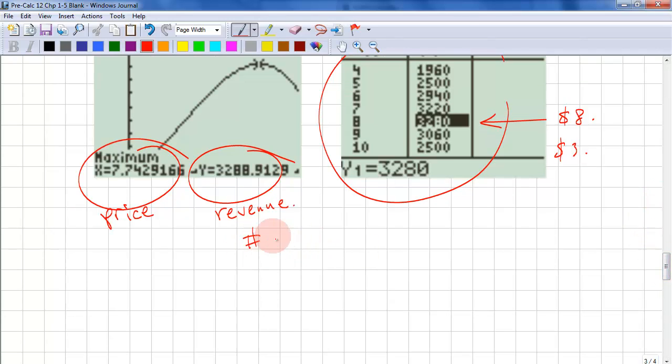And we need to know how many tickets are sold. Number of tickets equals revenue, total revenue, divided by price. So that's 3280 divided by 8. And that gives us 410 tickets.